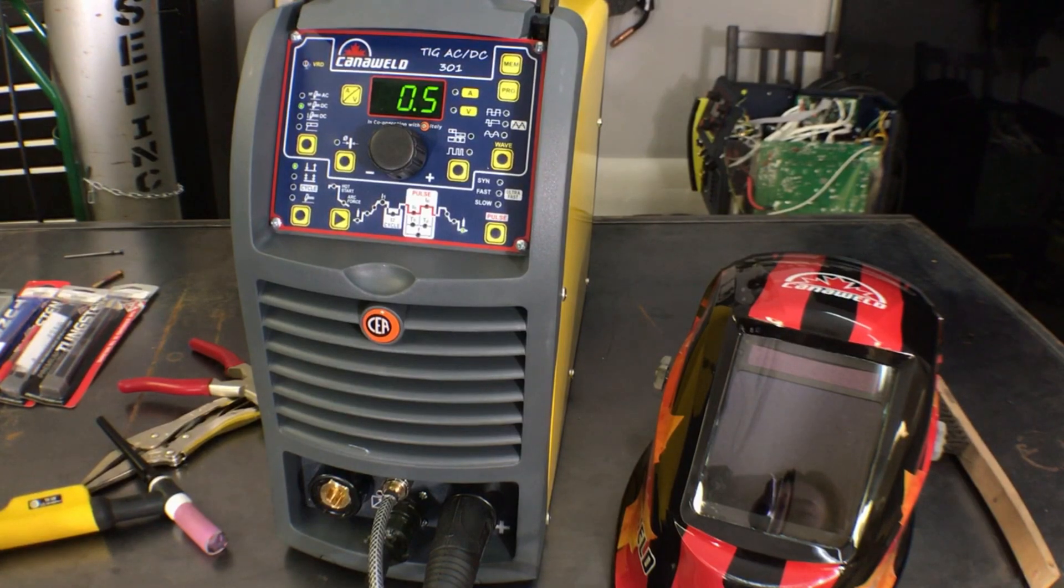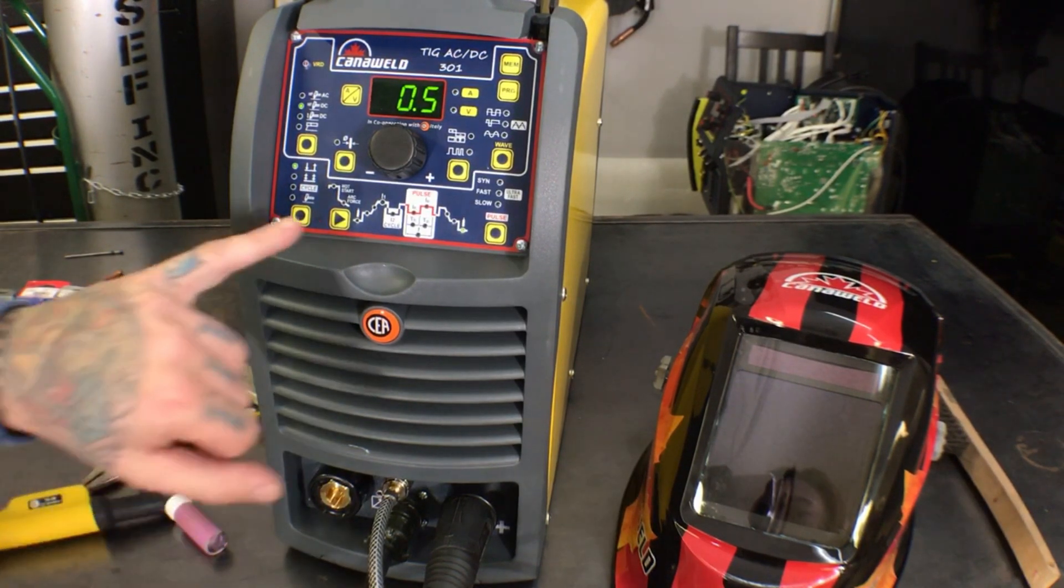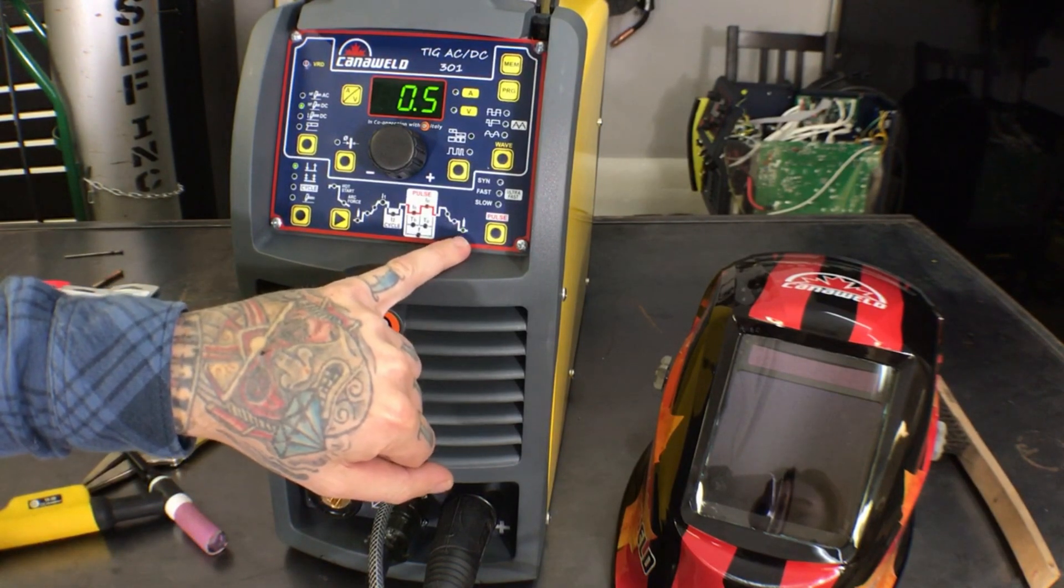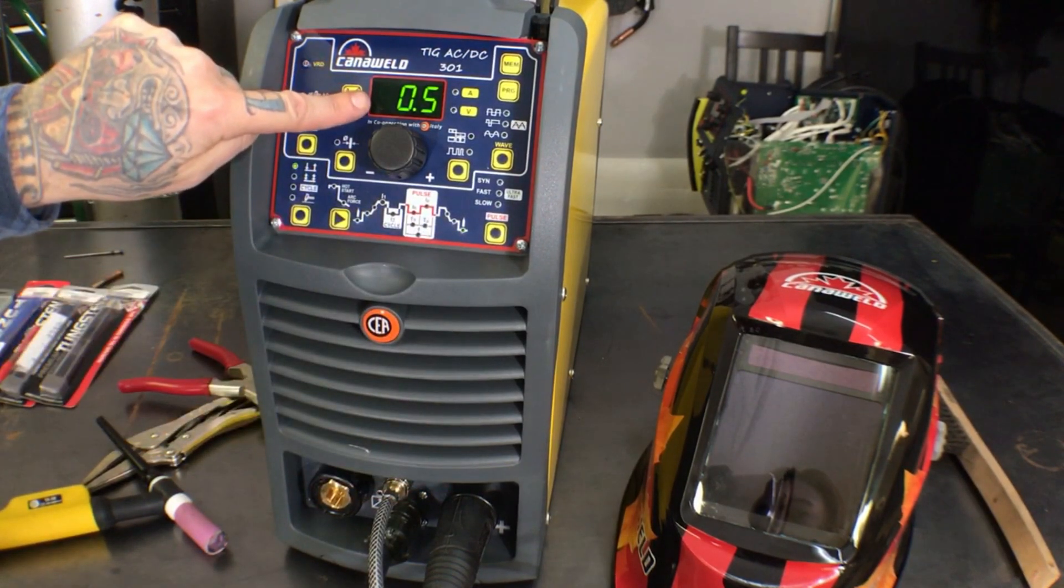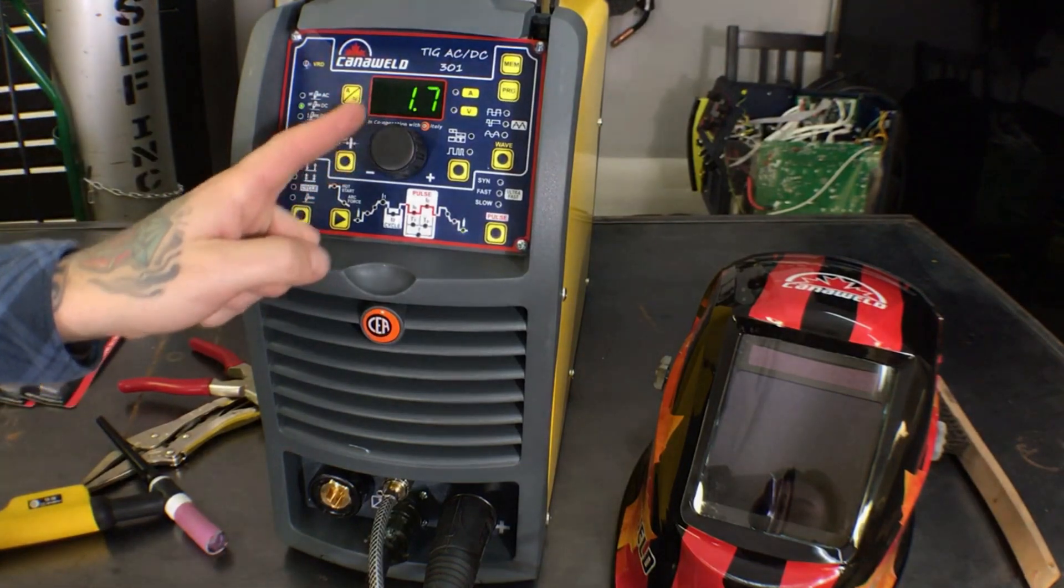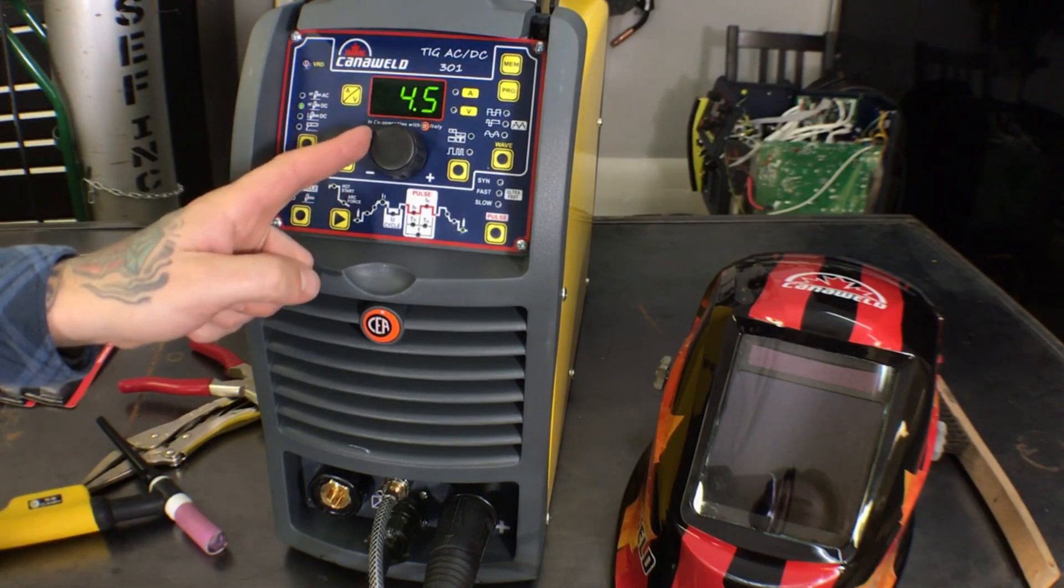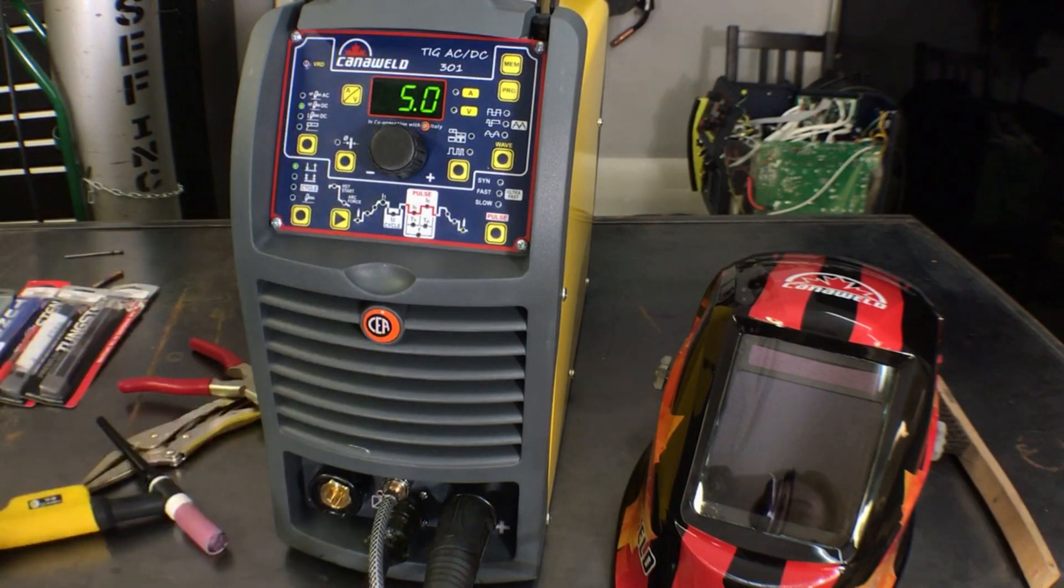Another reason your tungsten may be burning away too quickly is because it's oxidizing. Your tungsten will oxidize because you're not using enough post-flow gas after your weld. So with the TIG ACDC 301, you can see that we've selected the post-flow here, and right now you can see that it's at half a second. We're going to go ahead and turn that up to five full seconds, and that's going to keep your tungsten nice and cool after that weld, and it's going to help it last a lot longer and keep it from oxidizing.